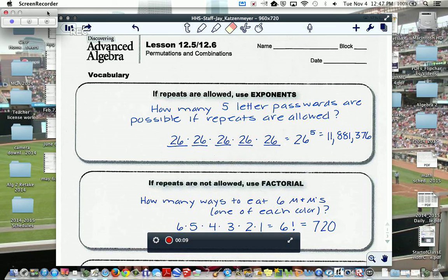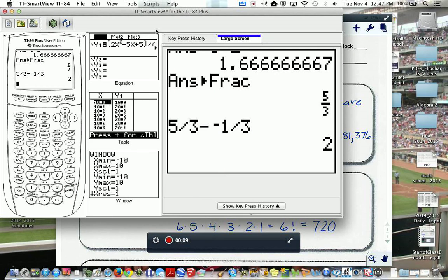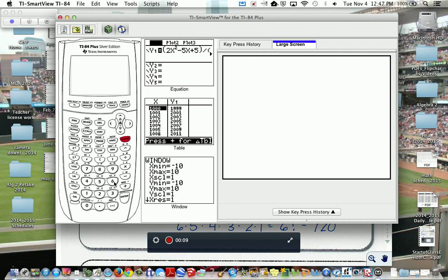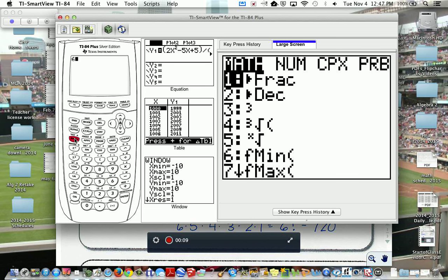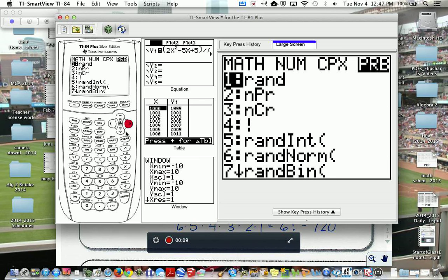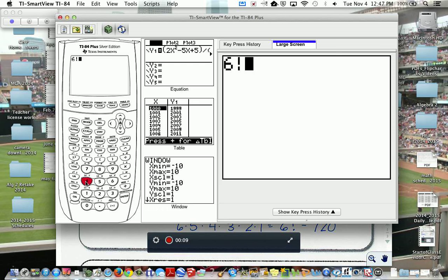again, or what's called six factorial. To do six factorial, you're going to want to go to the calculator, and you'd type in the number six first. Then you go into math, and you have to slide over to the PRB for probability menu, and you can see that the number four choice is factorial, the exclamation point, and you hit enter, and that's how you get 720.